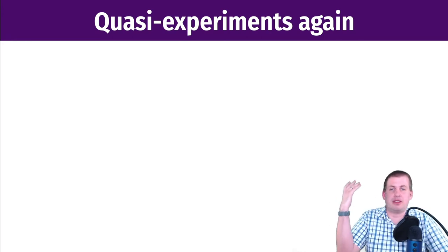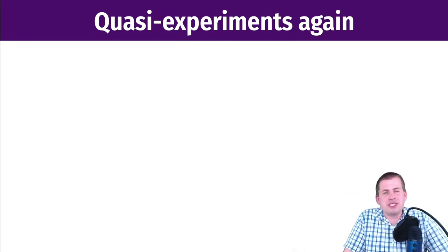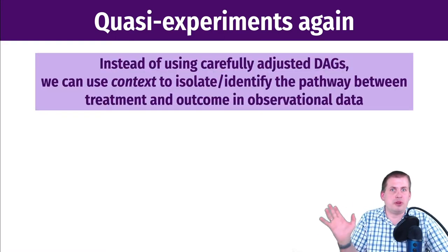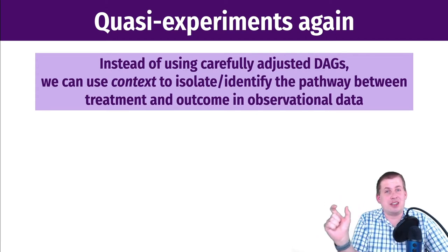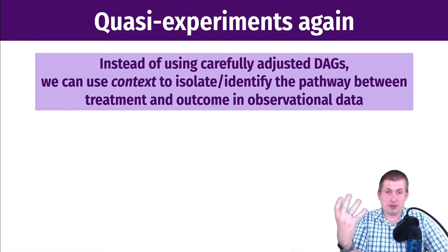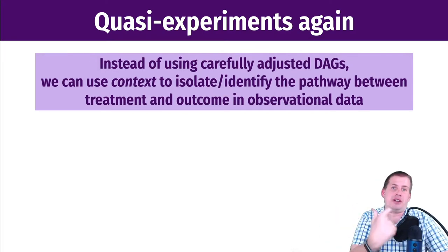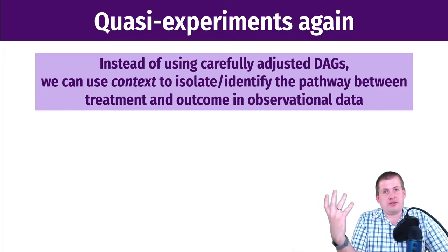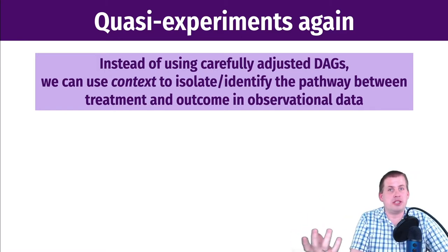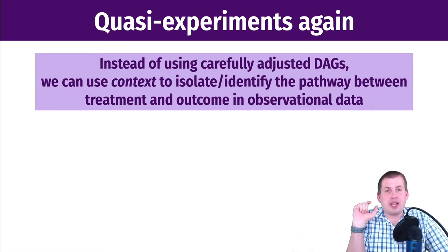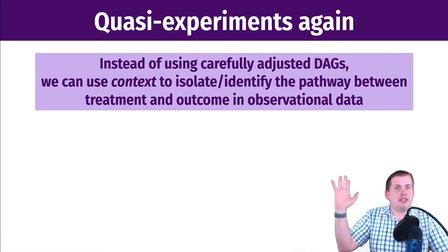We mentioned this at the beginning of the diff-in-diff session, but it's important to keep reviewing it. We've spent a lot of this semester talking about DAGs and how you can use causal graphs to isolate arrows between specific nodes. The goal of drawing a DAG is to figure out the adjustment sets you need so you can statistically isolate one arrow between your treatment and outcome nodes. With regular observational data you can do matching, inverse probability weighting, and other approaches.